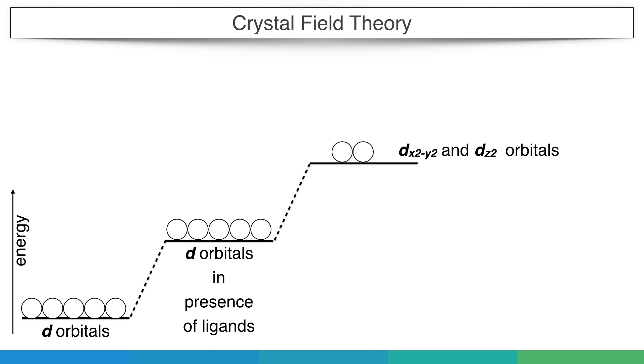Hence, you can see now d orbitals are split into two levels. The upper two orbitals are now having the same energy, so they are called doubly degenerate. And the lower level has three orbitals of the same energy, so they are called triply degenerate orbitals.